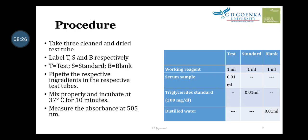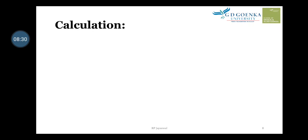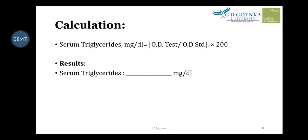After 10 minutes, measure the absorbance at 505 nanometers. Serum triglyceride in mg/dL can be calculated using the formula: (OD of test ÷ OD of standard) × 200. Report results in mg/dL. The normal range for serum triglycerides is below 150-160 mg/dL.